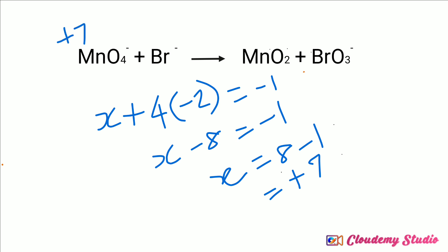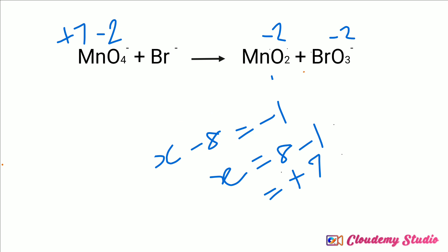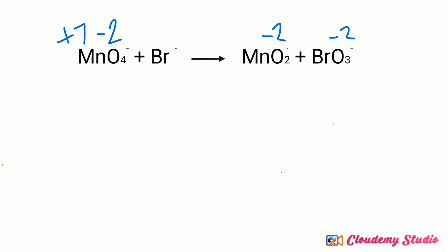The oxidation number of oxygen in all species is minus two. For bromide ion, it is a monoatomic ion, so the oxidation number equals its charge. The bromide ion charge is minus one, therefore the oxidation number of bromide ion is minus one.